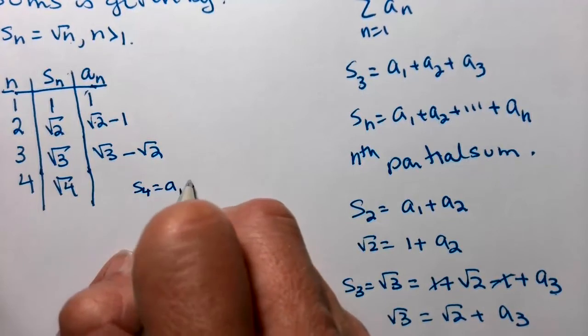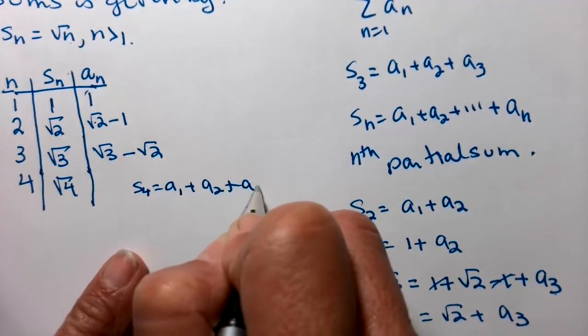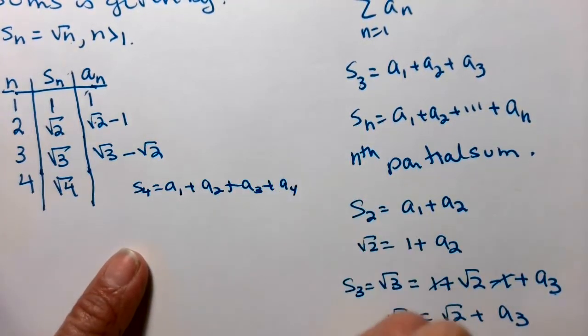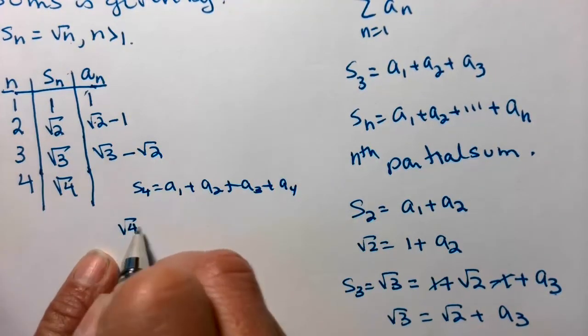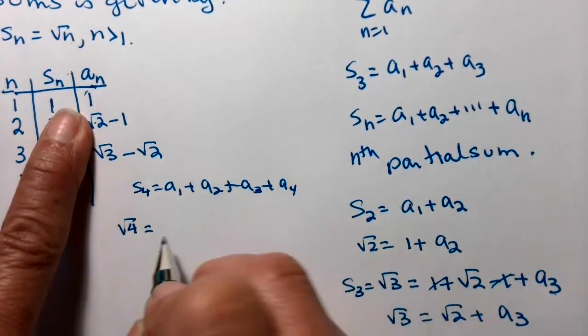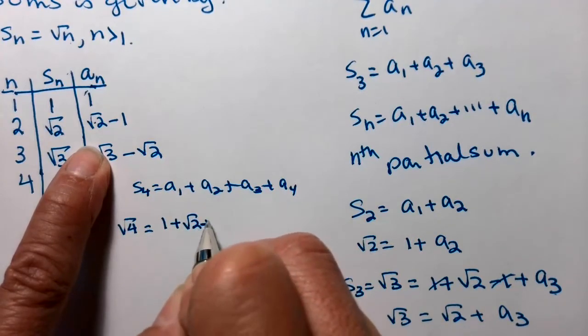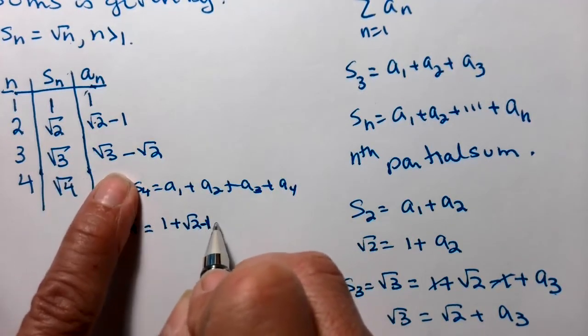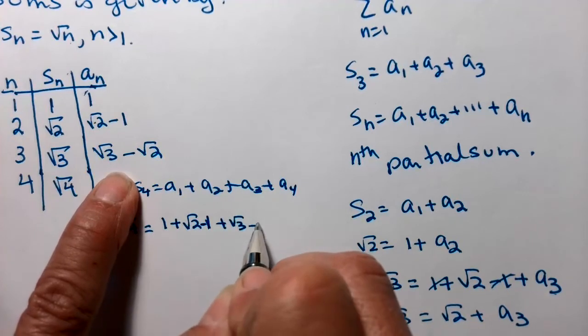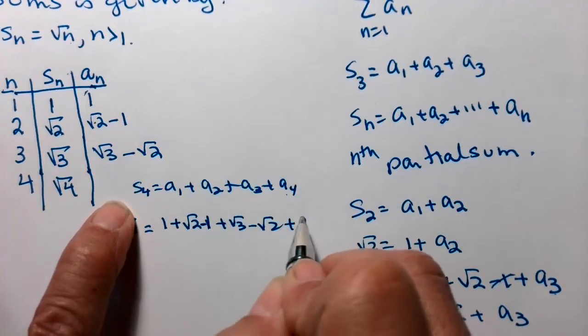So I'm going to sneak it right up in here. So then my s sub 4 is a sub 1 plus a sub 2 plus a sub 3 plus a sub 4. So we want that to equal the square root of 4. So a sub 1 is 1 plus a sub 2, that's a minus 1, plus a sub 3 plus a sub 4. We're looking for a sub 4.